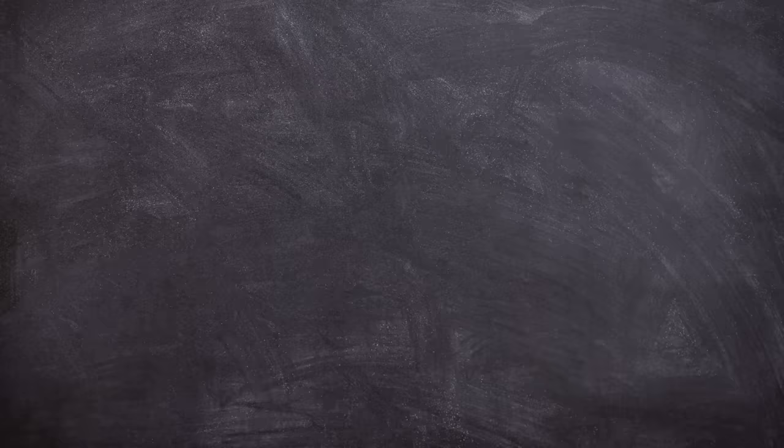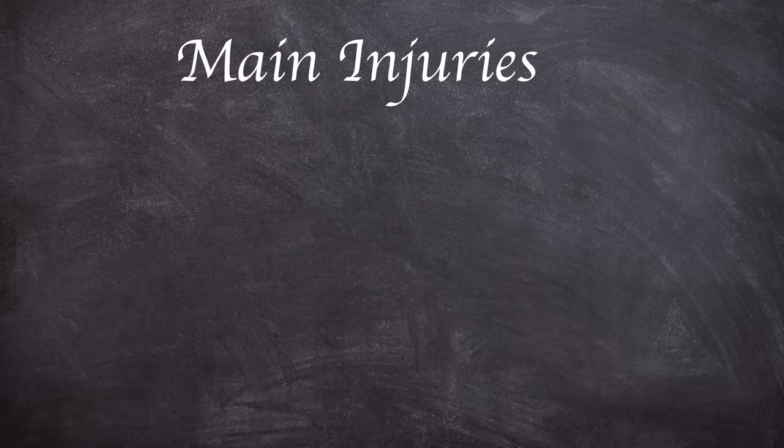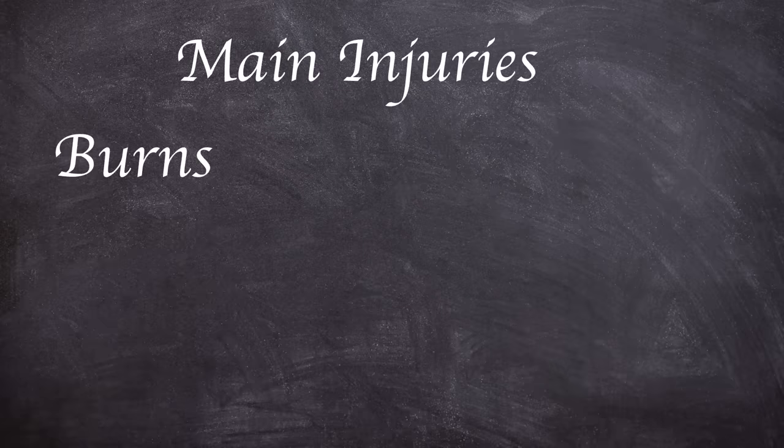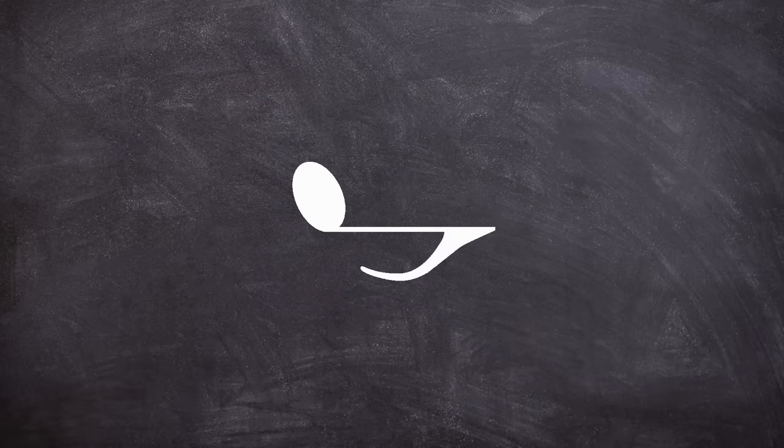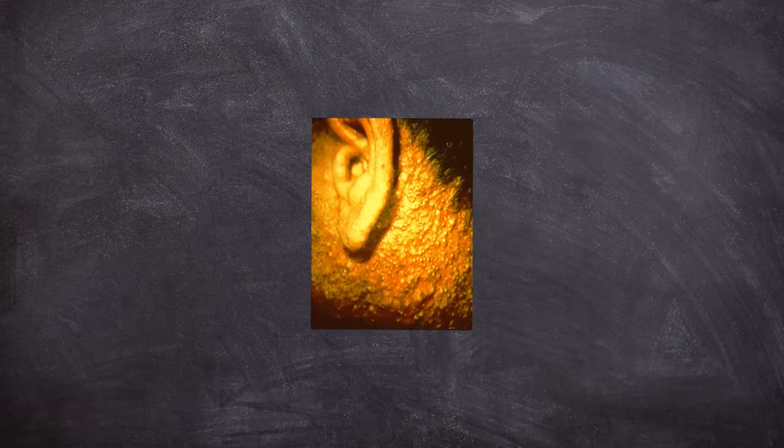Short-term effects on the human population was primarily burns. However, long-term effects were chloracne, cancers, respiratory issues and diabetes. As a side note, chloracne is a pretty nasty condition as it causes acne-like symptoms on the skin, usually around the face, neck and armpits. The condition is particularly resilient to treatment and can persist up to two years if you're lucky or unlucky, lifetime.